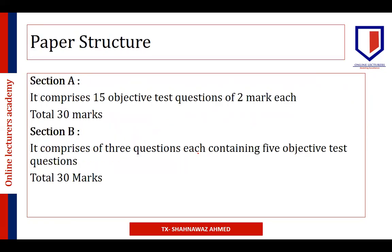Now let's begin with the paper Taxation. For ACCA papers F5 to F9 — from Performance Measurement to Financial Management — the paper structure is quite similar with minor differences. This particular paper is a three-hour paper comprising three sections. Section A has 30 marks and comprises 15 objective test questions, two marks each, tested from the entire syllabus. It is very important that you cover each and every topic of the syllabus to perform better in Section A.